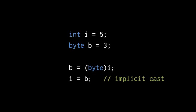So say if we have an int variable i with the initial value 5, and a byte variable b with the initial value 3, well if we want to assign the value of i to b, we have to explicitly cast to a byte. But conversely, if we want to assign the value of b to i, we don't.